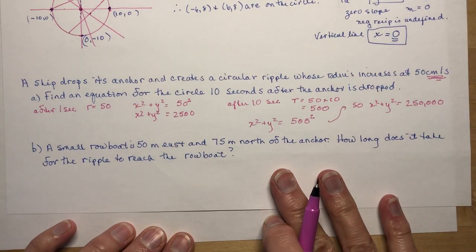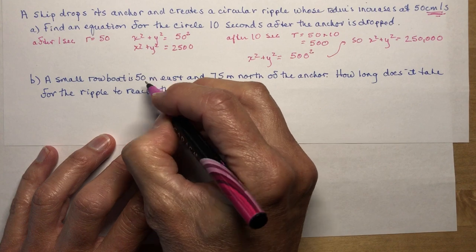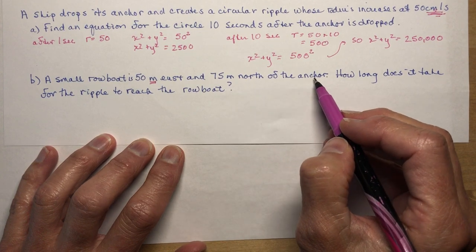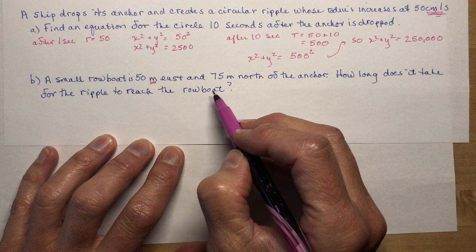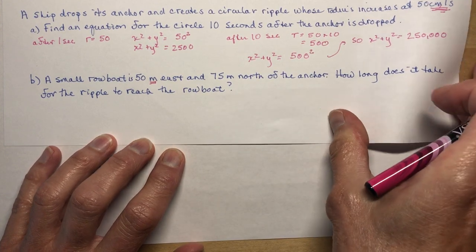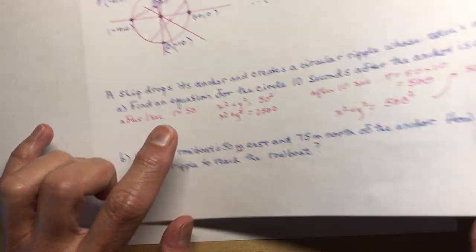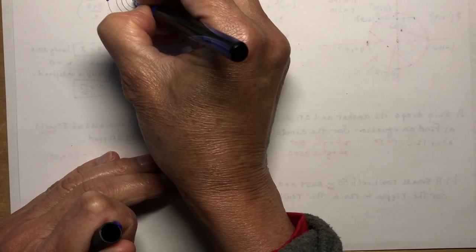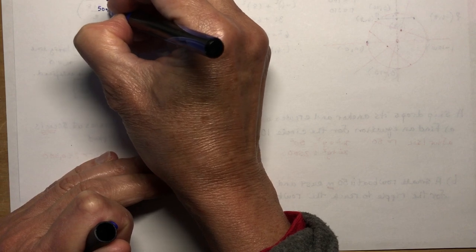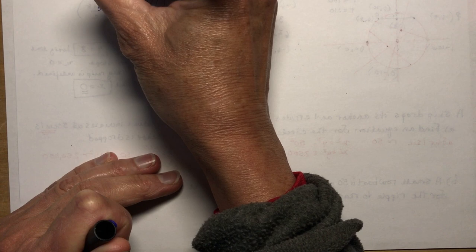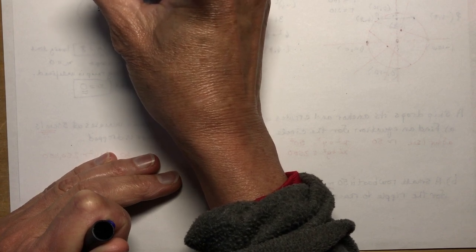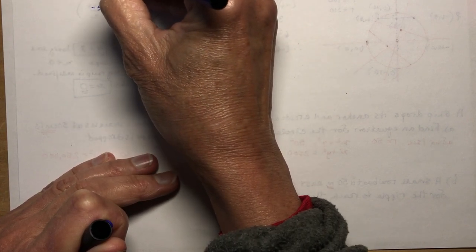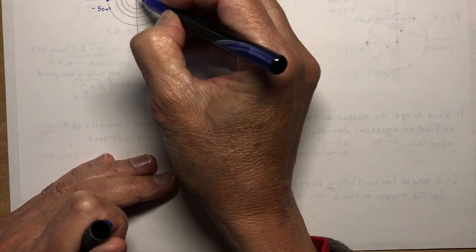The second part: a small rowboat is 50 meters east and 75 meters north of the anchor. How long does it take for the ripple to reach the rowboat? The coordinates of the rowboat are (50, 75). Using the distance formula from the origin, the distance is the square root of 50² + 75².